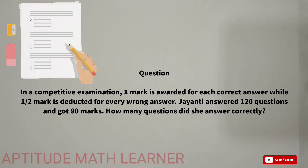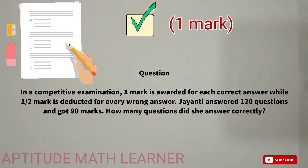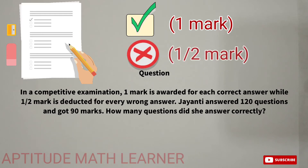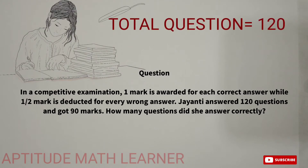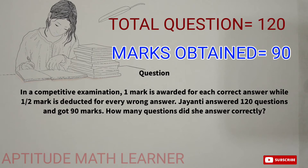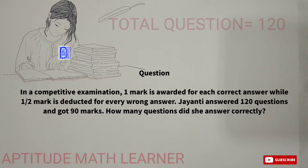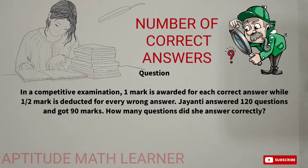In a competitive exam, one mark is awarded for each correct answer while half mark is deducted for every wrong answer. Jayanti answered 120 questions and got 90 marks. How many questions did she answer correctly?